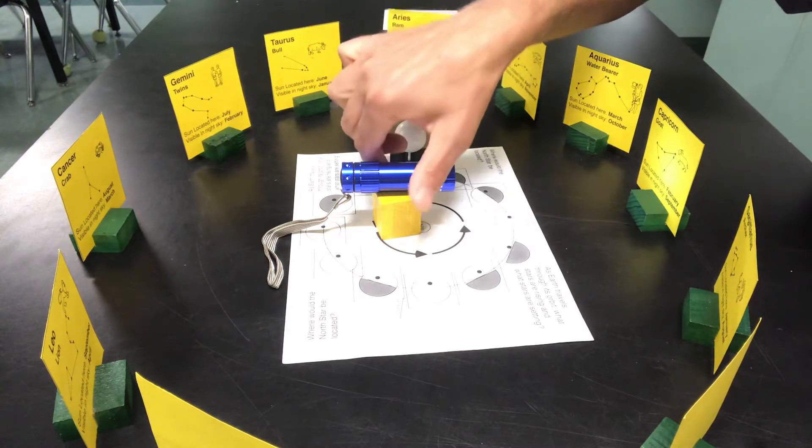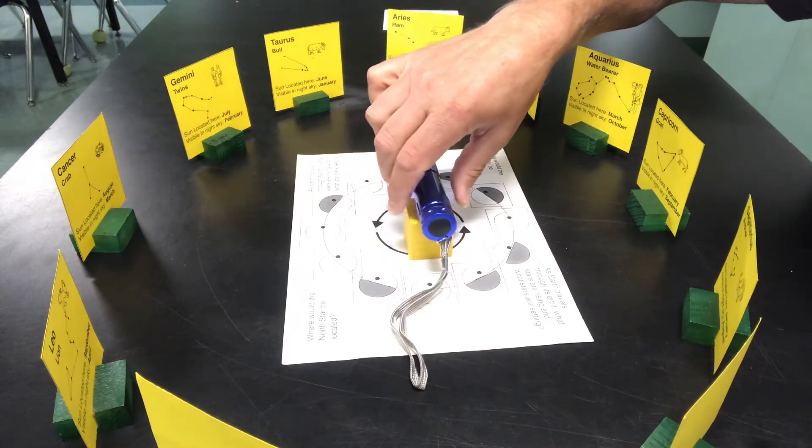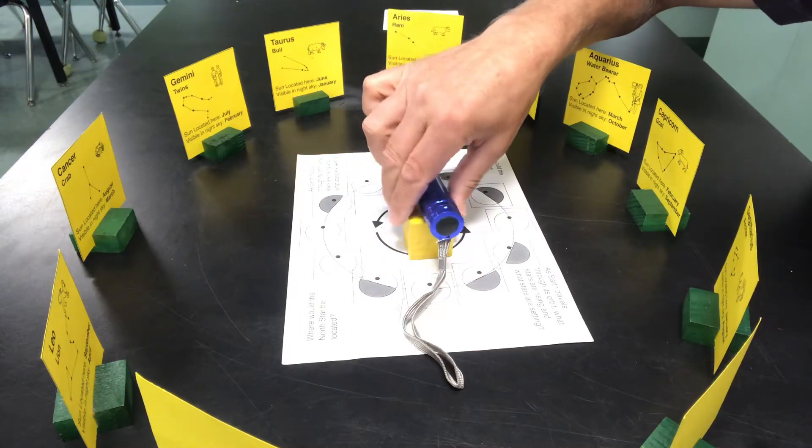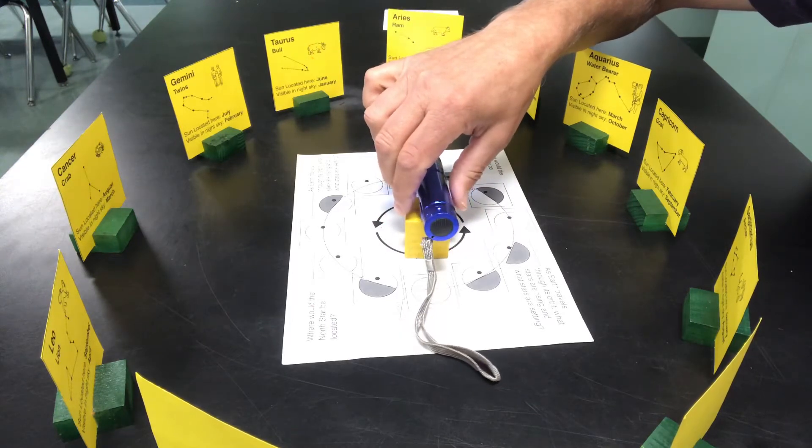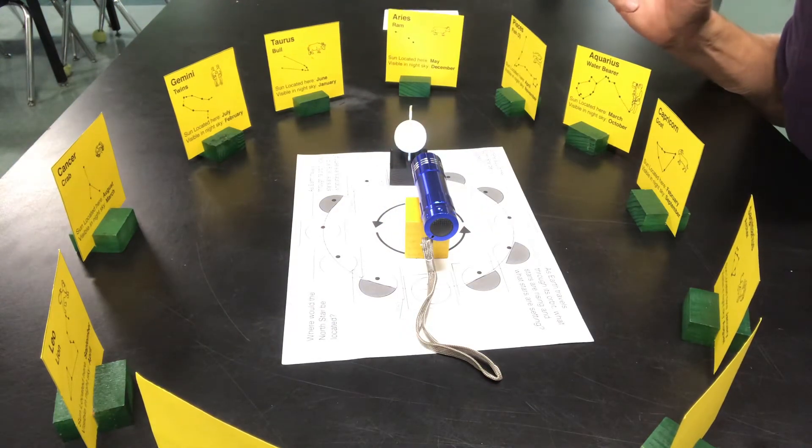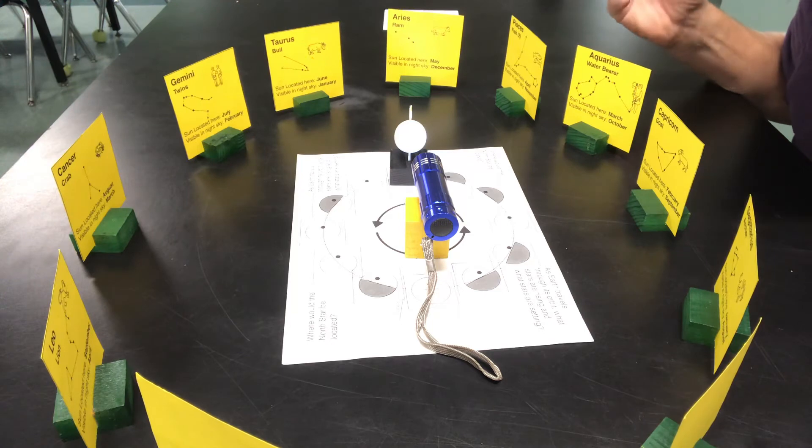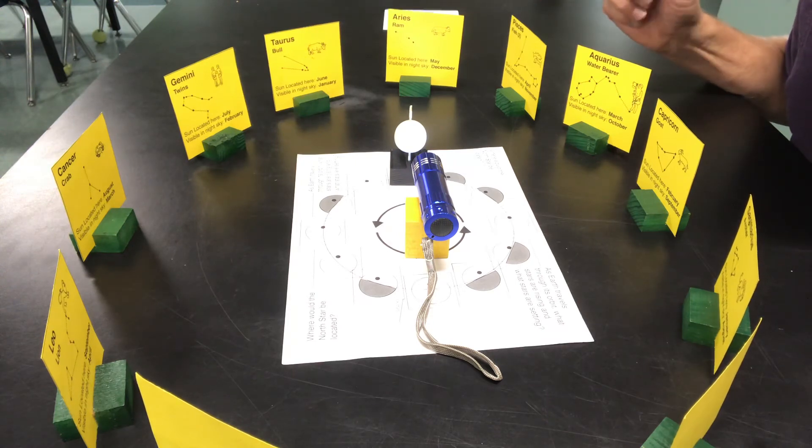And so this is a pretty important model. What we do is we have the kids really think about the model and then they have to create their own model, maybe just using one example or a couple examples to explain why we see certain constellations at different times of the year.